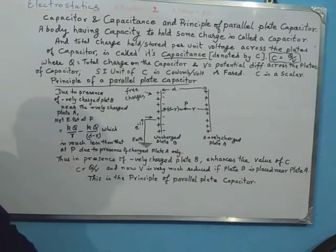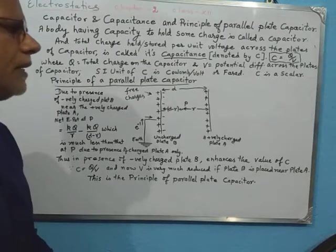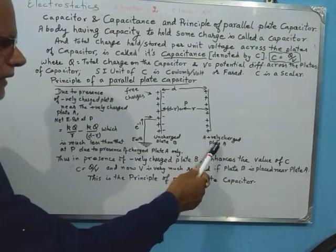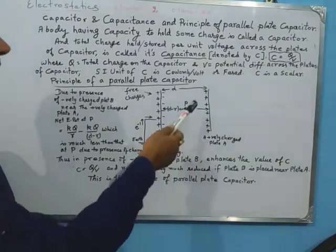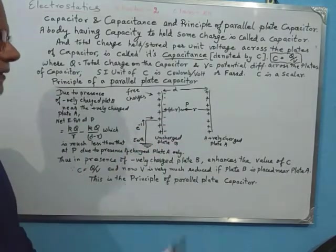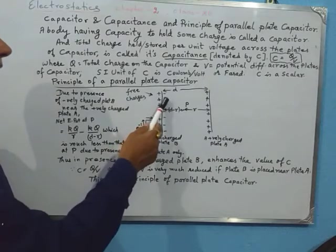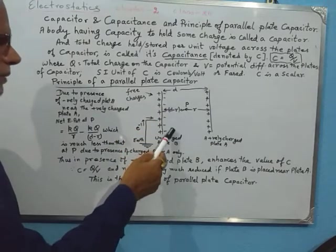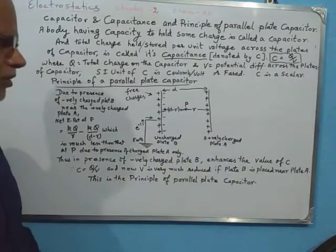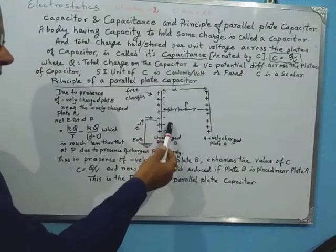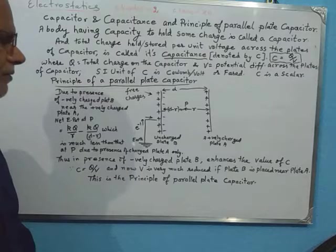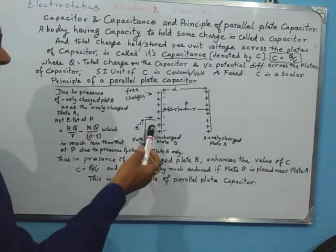So how do we enhance the capacitance? If we have a positively charged plate A, we bring another uncharged plate near it. Due to induction, negative charges are pulled towards the positive plate and positive charges are pushed away from it, so the uncharged plate B becomes polarized — negative charge on the side facing plate A.